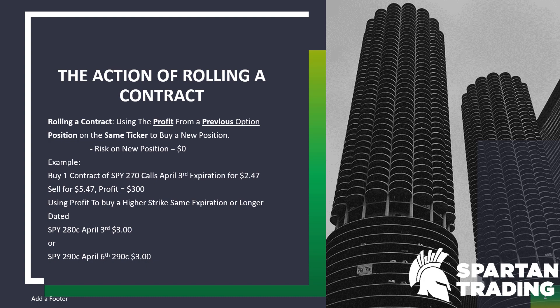Let's say you're trading SPY for an example. You buy one contract — SPY 270 calls, April 3rd expiration, for $2.47. You sell them for $5.47, so you made $300 in profit. You use those profits from that initial position — that $300 — to buy a higher strike on the same ticker or at a longer expiration date. You can take the same date at a higher strike, or a longer expiration date at a higher strike as well if you want to hold the position overnight or a little bit longer than a week.